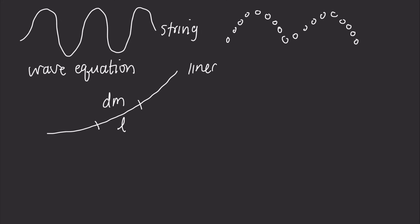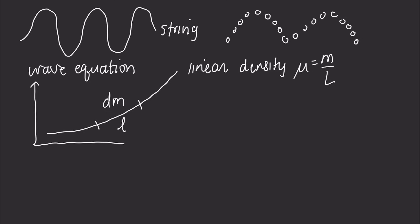The string has a linear density μ, which equals m over the total length of the string. We'll also assume that the wave amplitude is small, so the element is tilted only slightly from the x-axis. We're going to insert this element into a y and x-axis plot.